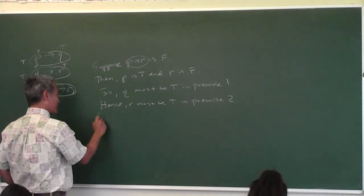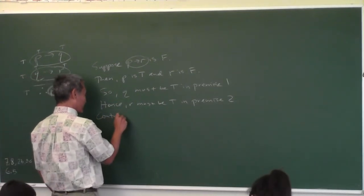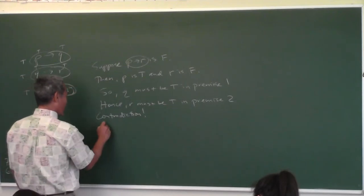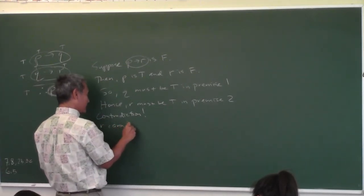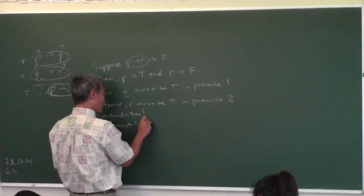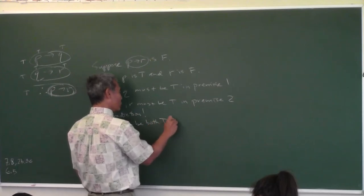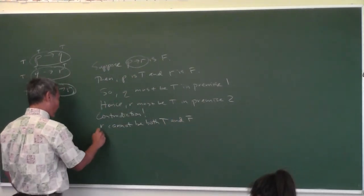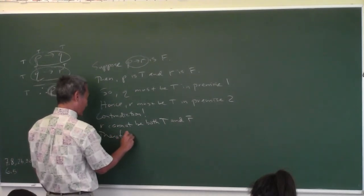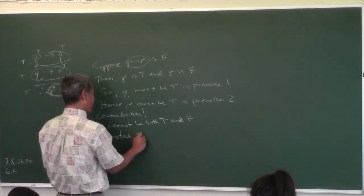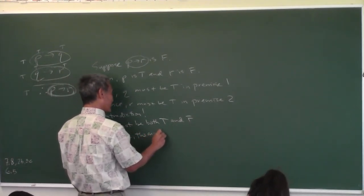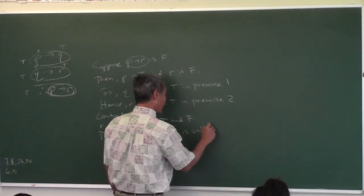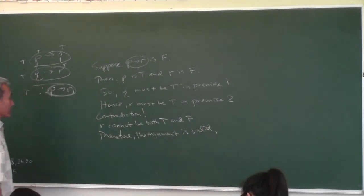So that's your contradiction. Contradiction! That's your goal — your goal is to get a contradiction. R cannot be both true and false. Therefore, the argument must be valid. That's an indirect proof.